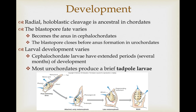They are deuterostomes, so they show radial holoblastic cleavage as the ancestral state in chordates, but the fate of the blastopore varies. In cephalochordates, it becomes the anus; in urochordates, the blastopore actually closes before the anus is formed, so it forms elsewhere. The extent of larval development also varies — cephalochordate larvae exist for several months, dispersing and foraging before developing adult morphology, while urochordates produce a relatively brief tadpole larva that disperses for days or weeks, then metamorphoses into the adult, which looks very different and lacks many of the five chordate characteristics.